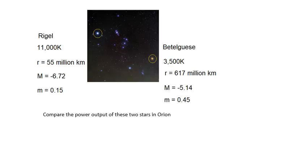Look at this - this is Orion, my favorite constellation. All kinds of interesting things in Orion, including Rigel, which is a blue supergiant, and Betelgeuse, which is a red supergiant. Look at the temperatures: Rigel 11,000 Kelvin surface temperature, Betelgeuse 3,500 Kelvin. Rigel is a lot hotter. Look at the radius of Rigel: 55 million kilometers. Betelgeuse: 617 million kilometers. Betelgeuse is much much bigger, has a much bigger surface area.